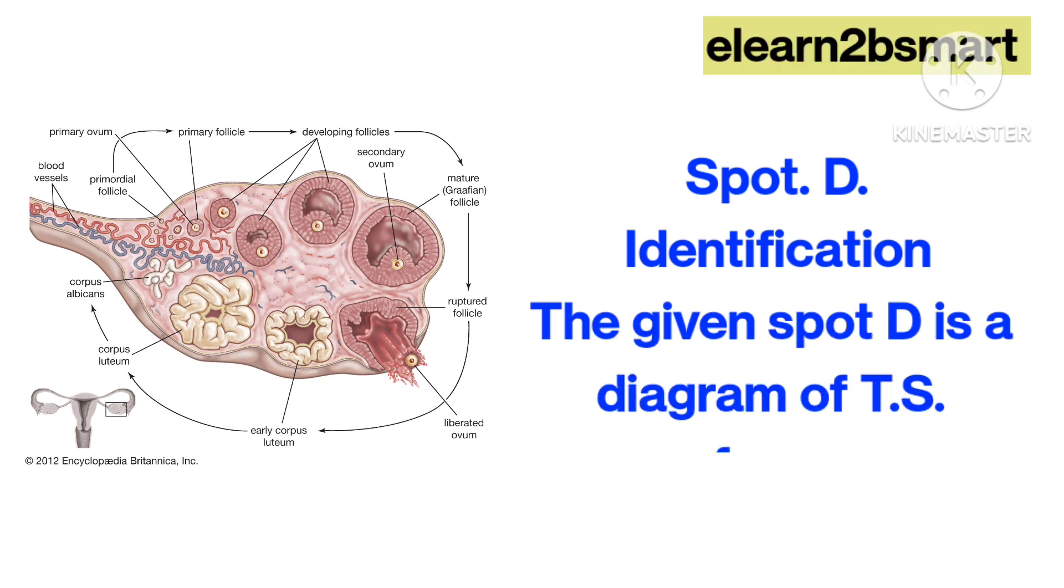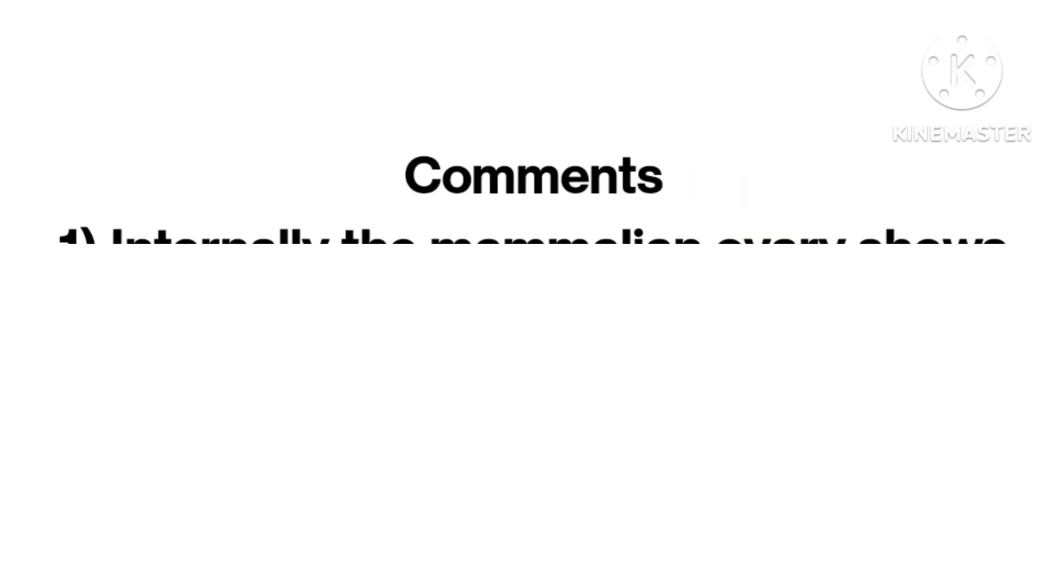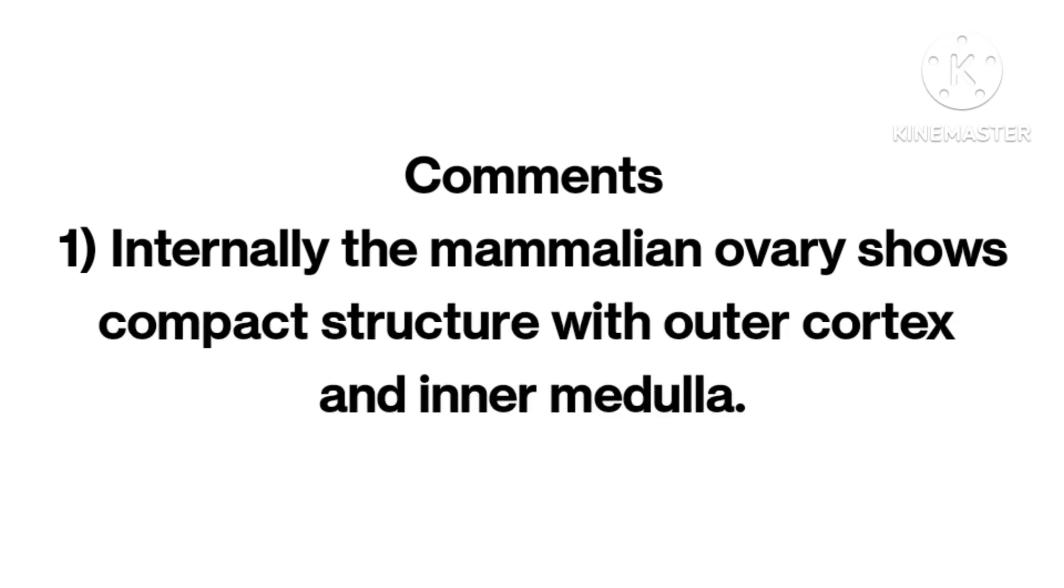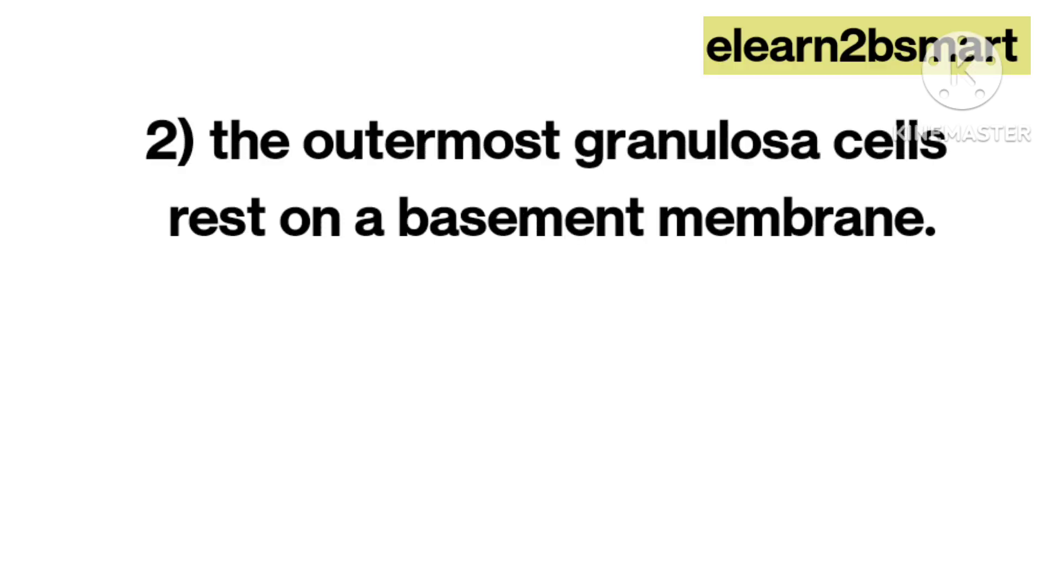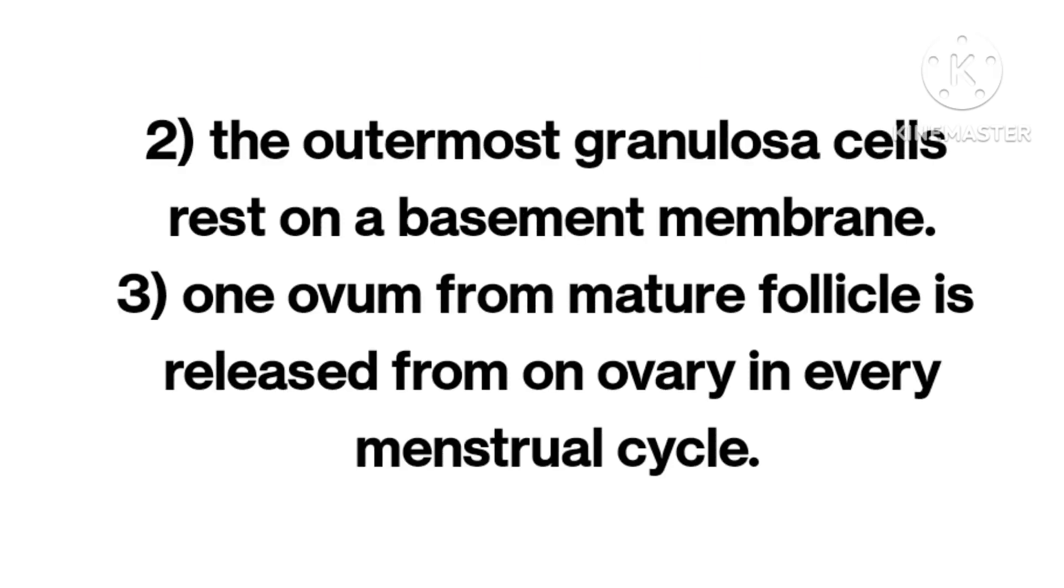Spot D. Identification: The given spot D diagram is of T.S. of ovary. Comments: Internally, the mammalian ovary shows compact structure without a cortex and inner medulla. The outermost granulosa cells rest on a basement membrane. One ovum from mature follicle is released from an ovary in every menstrual cycle.